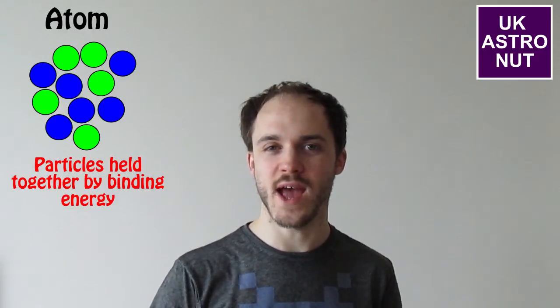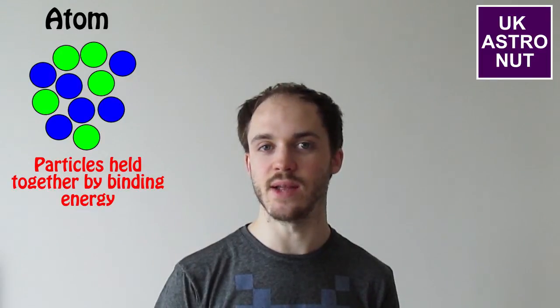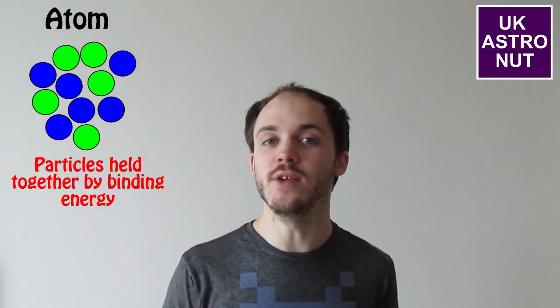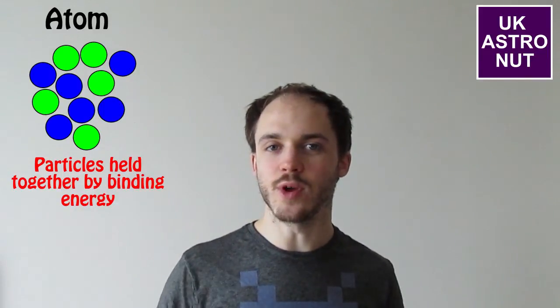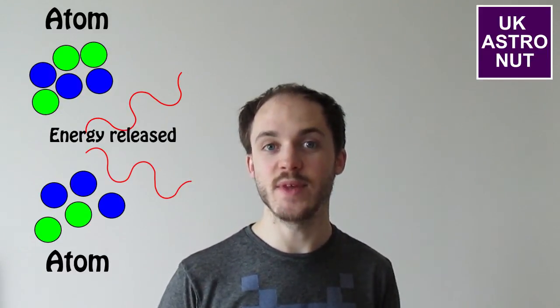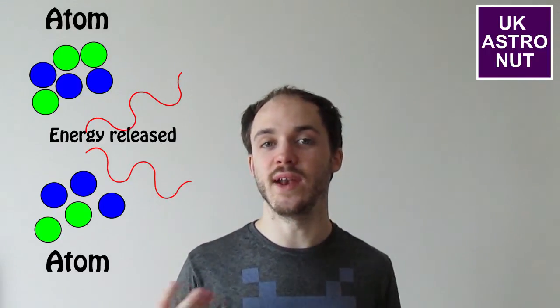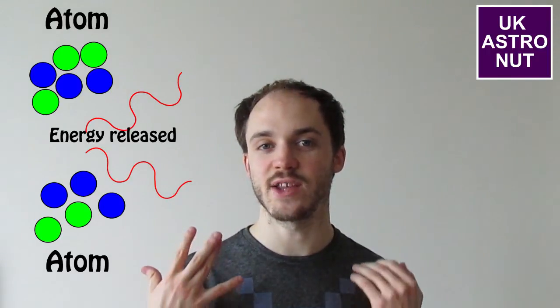This is obviously an incredibly powerful equation, but how can we use it to benefit us? Well actually it already does, and a lot of the electricity in your home comes from E equals mc squared — and this is through nuclear power. In atoms, all the particles are held together by something called a binding energy, which stops all the particles from flying apart from each other. But in nuclear fission, the atom is broken apart into smaller atoms, and this binding energy is released as this happens — released as heat — and this is how we create electricity.